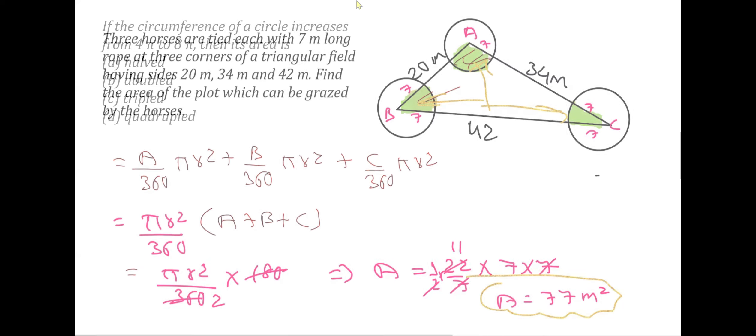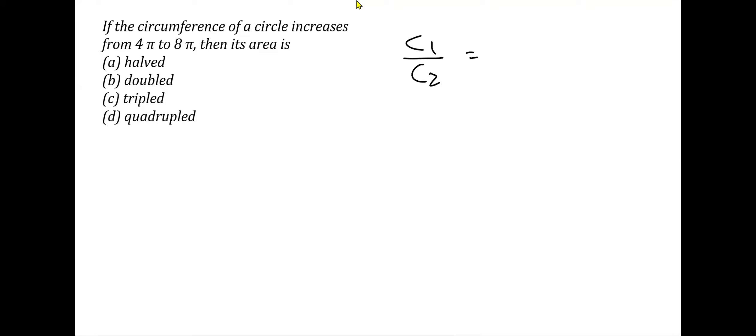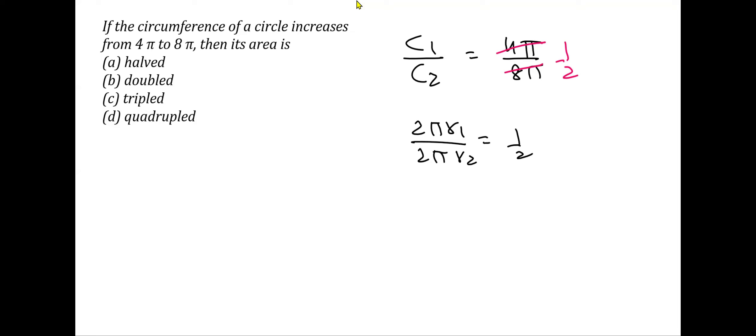The next question: the circumference of a circle increases from 4π to 8π. We need to find the change in the area — that is, the ratio of the areas. The ratio C1 over C2 equals 4π over 8π, which reduces to 1 over 2. Replacing circumference with the formula 2πr, we get 2πr1 over 2πr2. Cancelling 2π gives r1 over r2 equals 1 over 2.